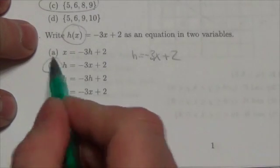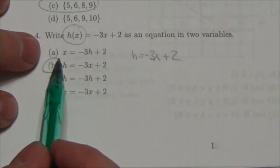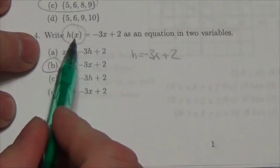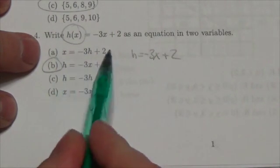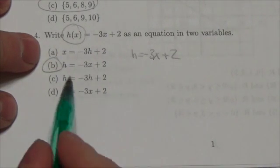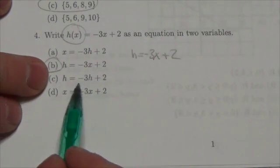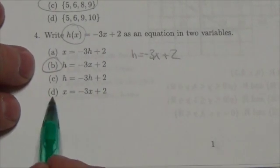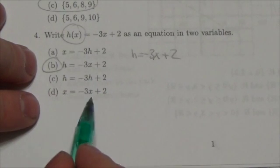Now we just have to check, and that's going to be the B value. Notice in this case, the reason why A doesn't work is because this particular function identifies x as the independent variable, and that's not the way it's written here — it looks like x depends on h. Down here, the reason why this one doesn't work is because there's only one variable — h is being used as both the dependent and independent variable. And down here, same reason except we're just using x, but it's being used as both independent and dependent.